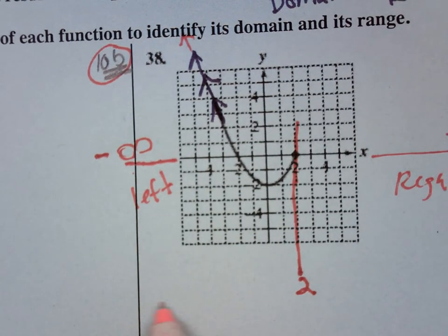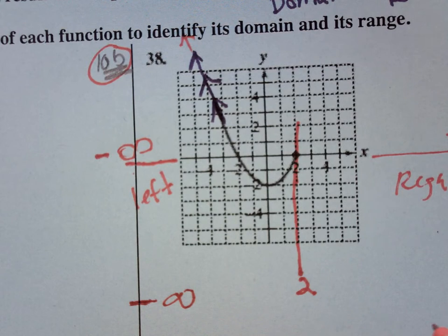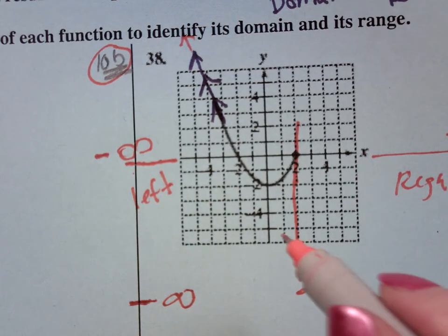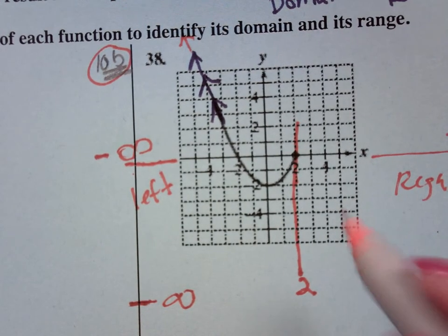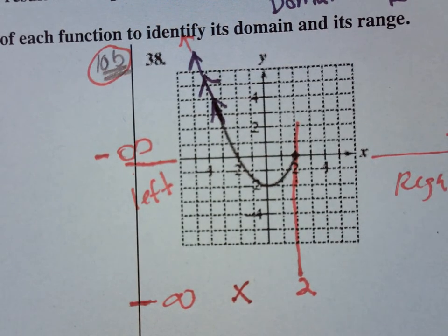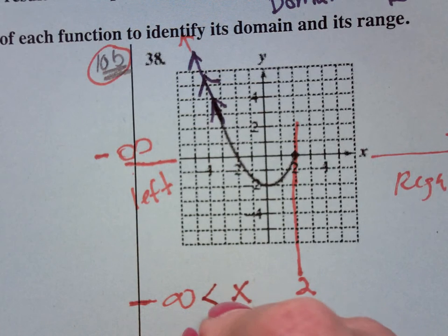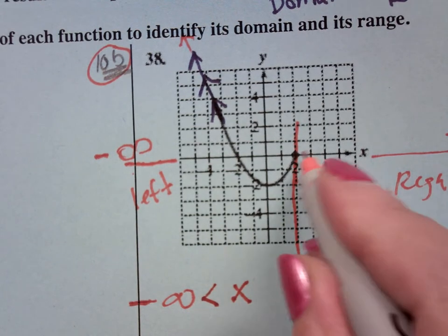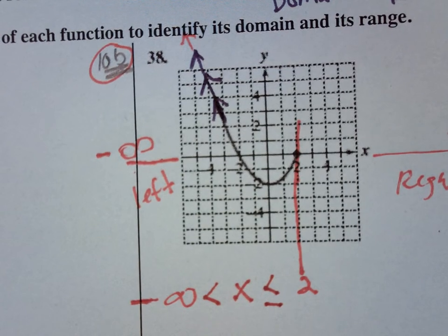So that says if I look at the domain, I'm going from minus infinity all the way to 2. An easy way to write this is that I know that my x's, because that's my domain, is going to be larger than negative infinity. But since this is a solid dot, less than or equal to 2.